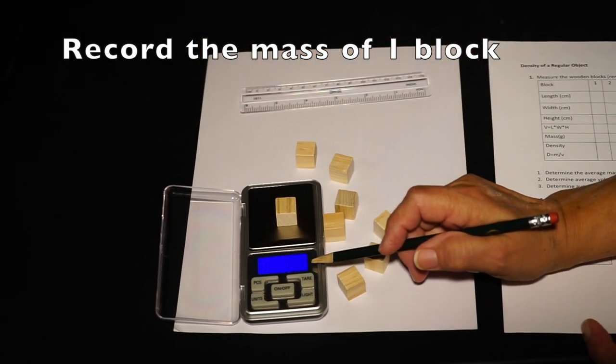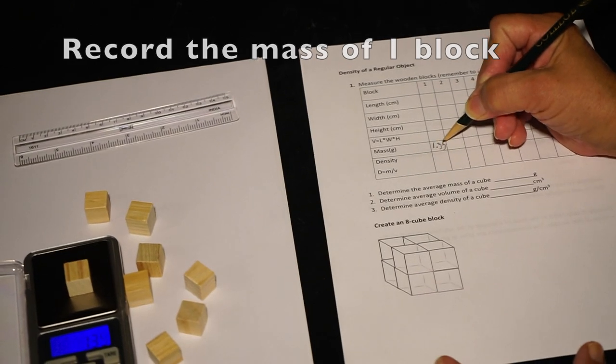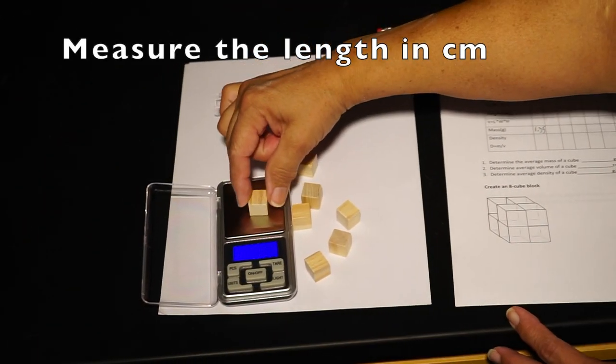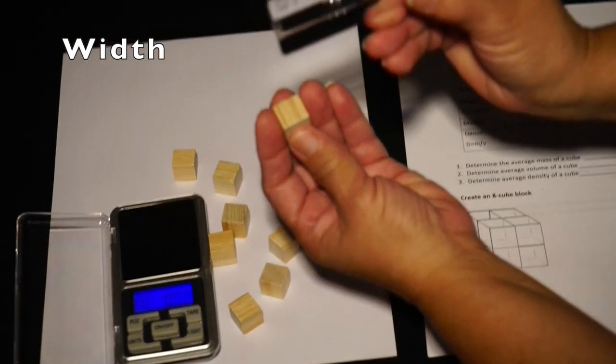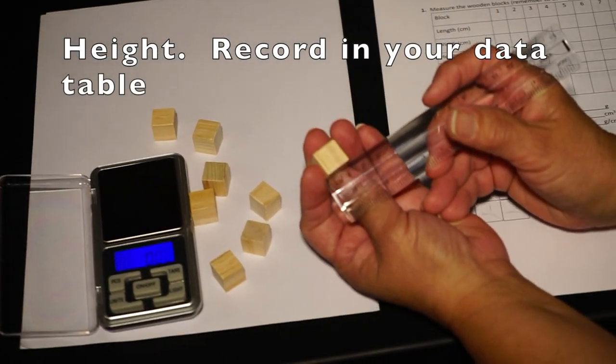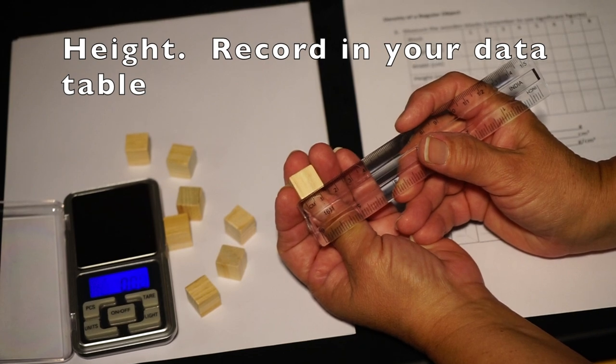Place one wooden block on the balance and record its mass in the data table. Next, using your ruler, measure the length in centimeters, then the width, and finally the height. Be sure to record these values in your data table.